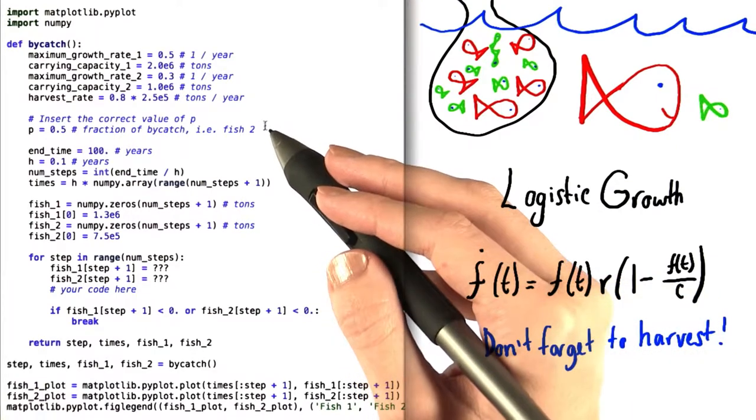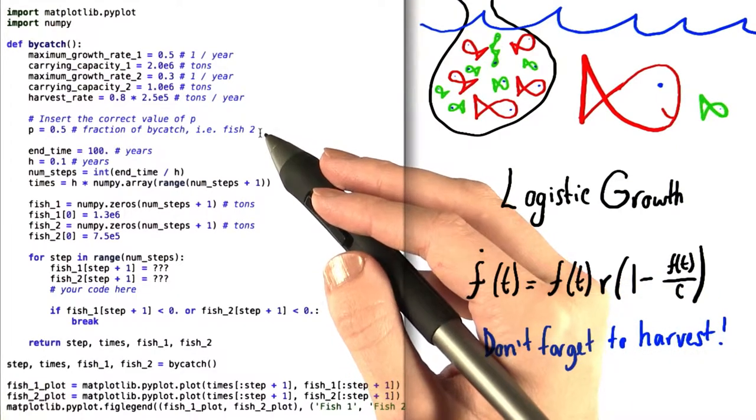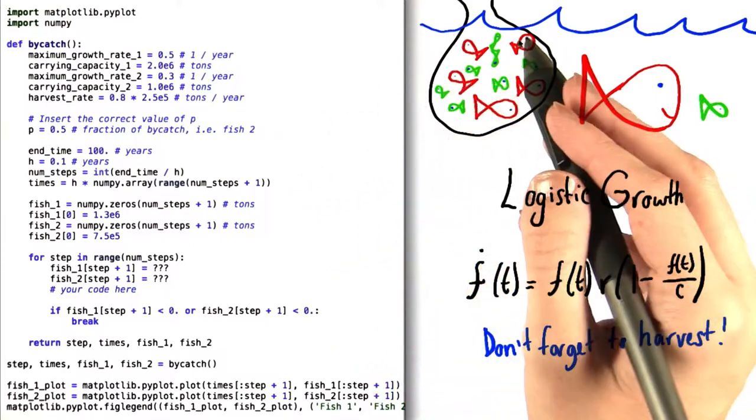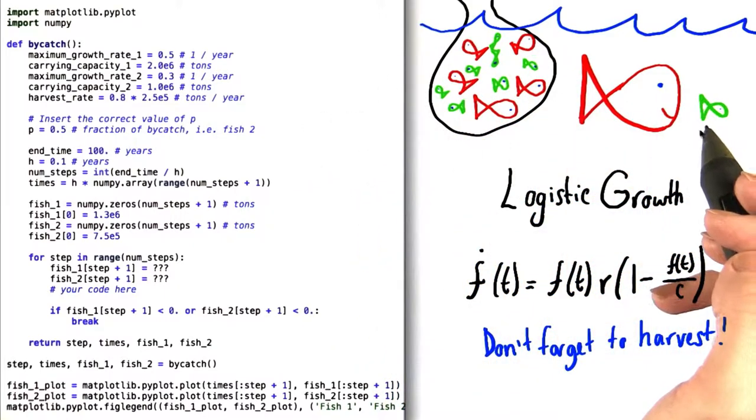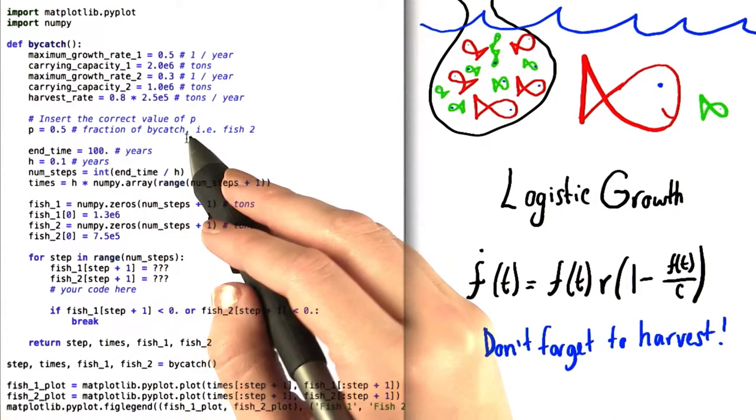We've created this parameter called P to represent the fraction of the total fish that we catch that are part of the green fish population. So we might also call this the fraction of the bycatch.